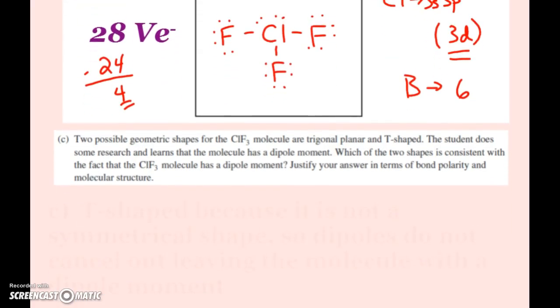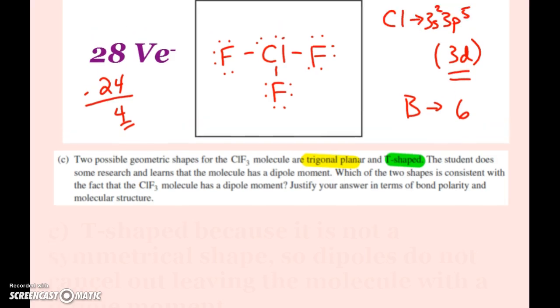Next up it says two possible geometric shapes are trigonal planar and T-shaped. The student does some research, learns that this molecule has a dipole moment. So the ClF3 molecule has a dipole moment. Which of the two shapes is consistent with this fact? Justify your answer in terms of bond polarity and molecular structure.